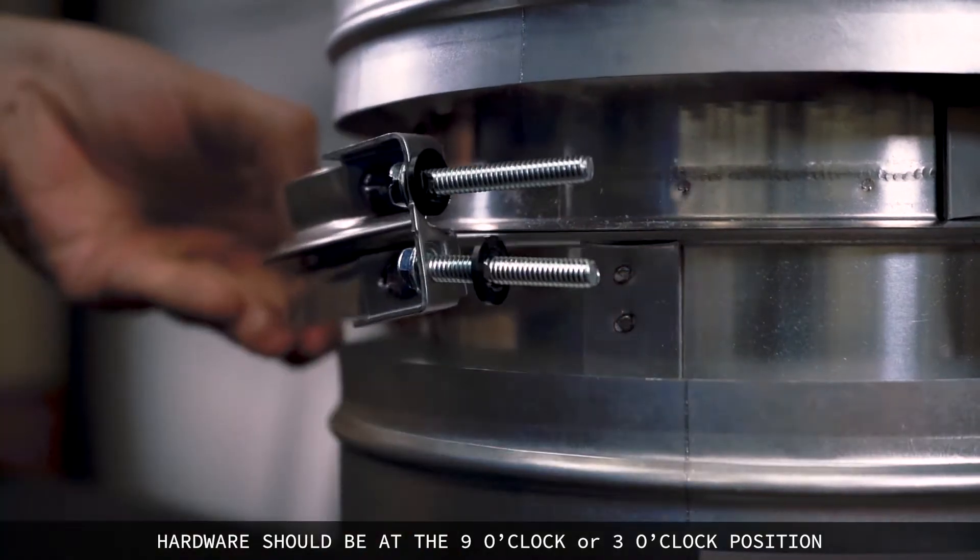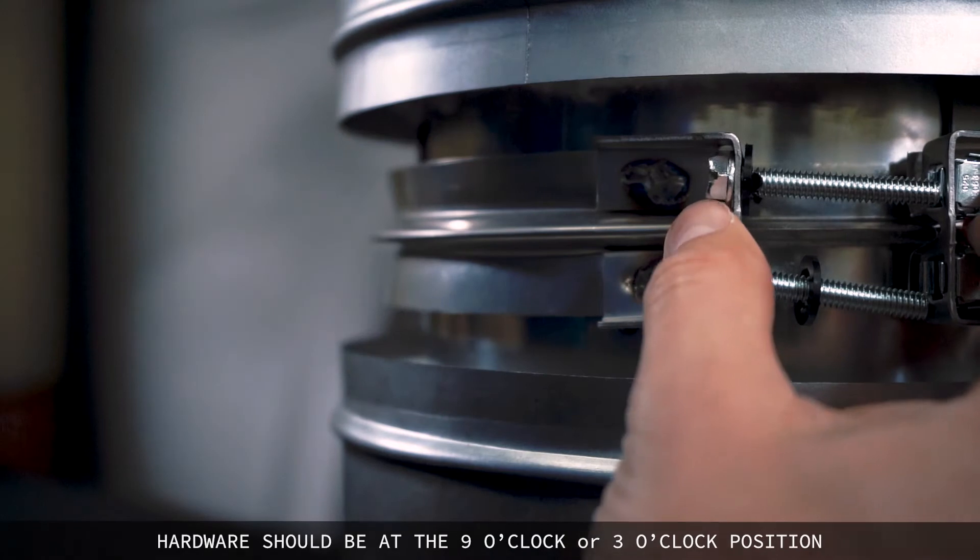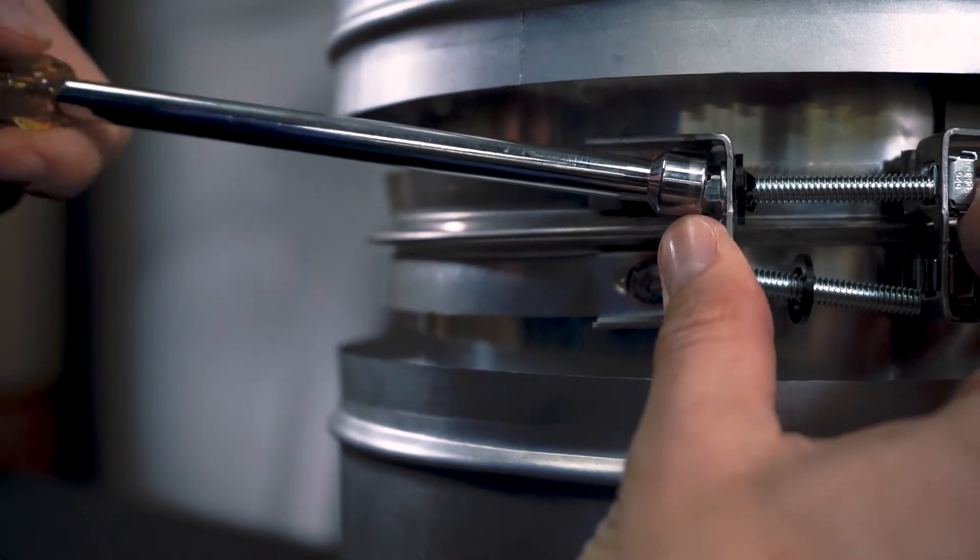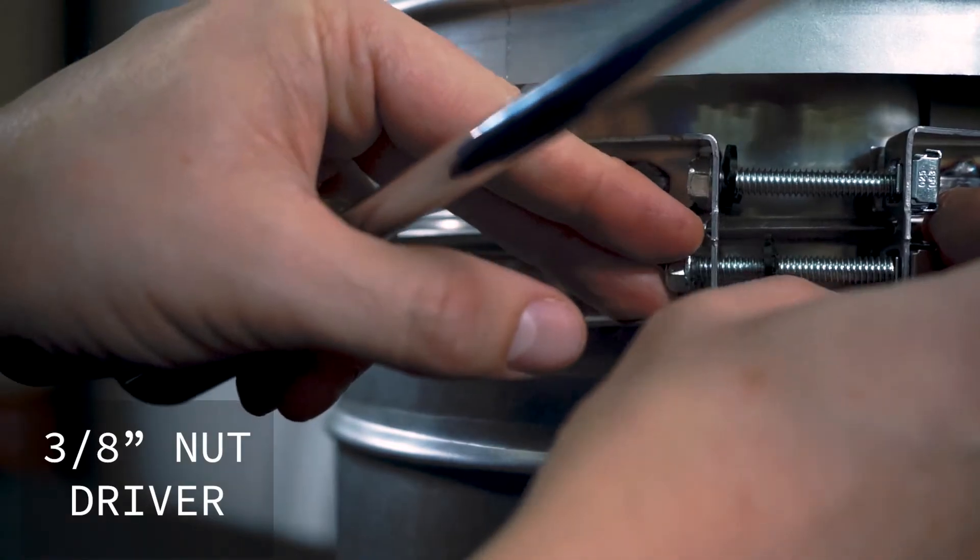For horizontal installations, do not locate the fasteners of the flange band on the bottom side of the vent pipe. To avoid cross-threading the nuts, use a 3/8 inch nut driver to start the flange bolts.